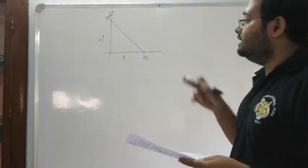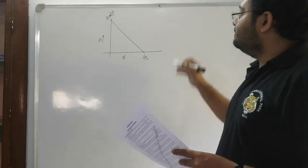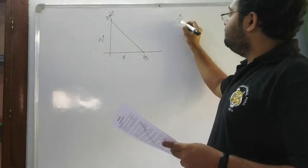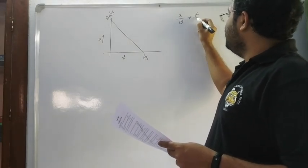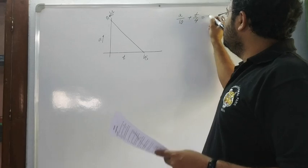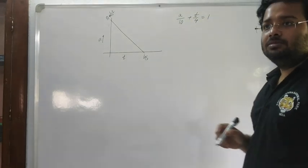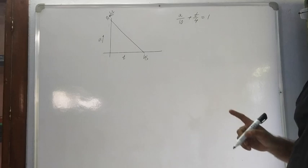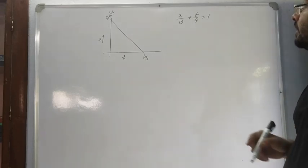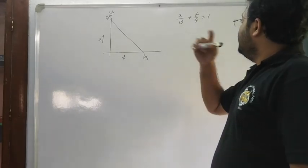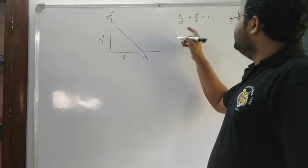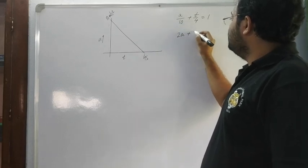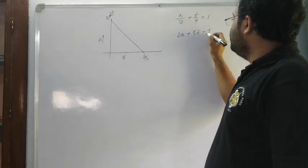We use the intercept form equation: a by 10 plus t by 4 equals 1, which is the standard x by a plus y by b equals 1 form. Multiplying through gives 4a plus 10t equal to 40, or 2a plus 5t equal to 20.